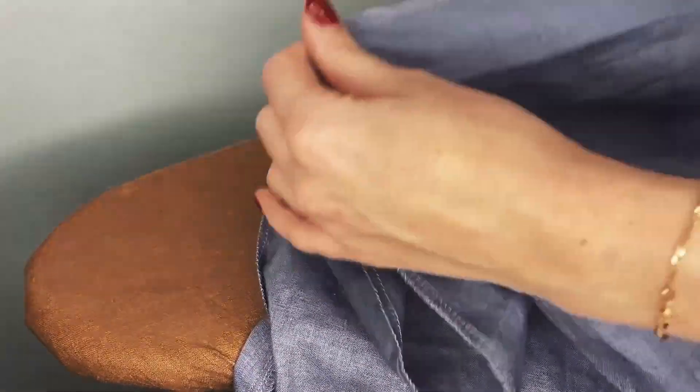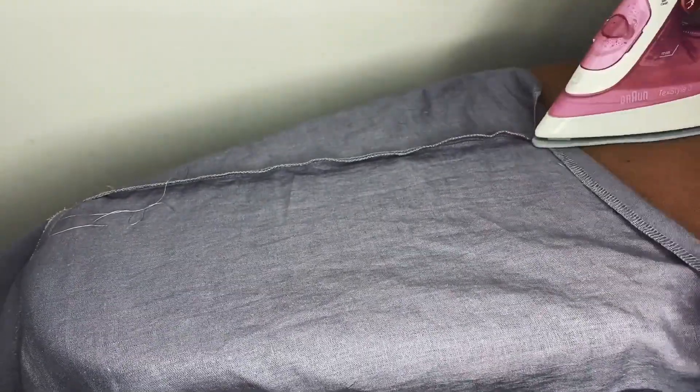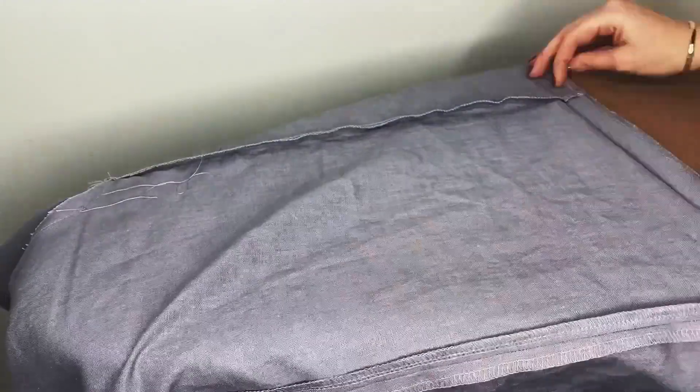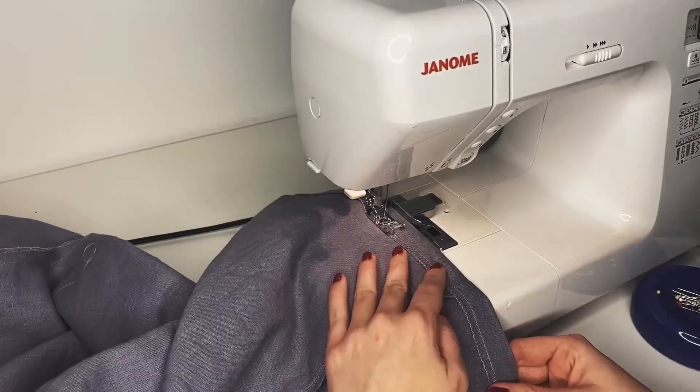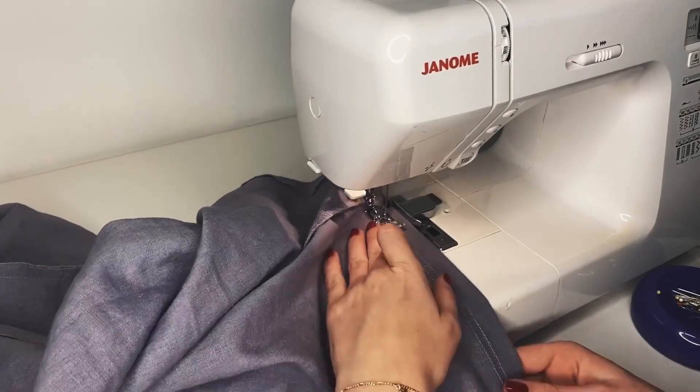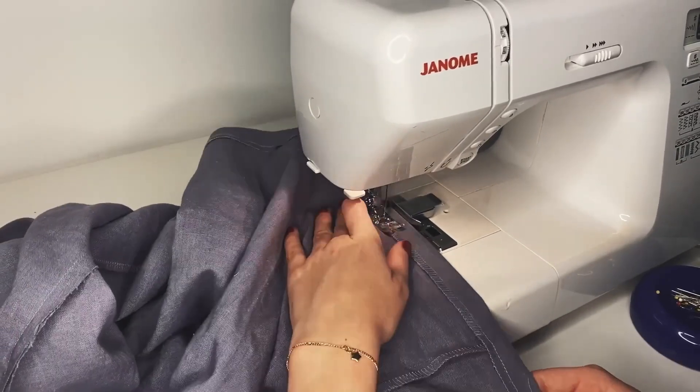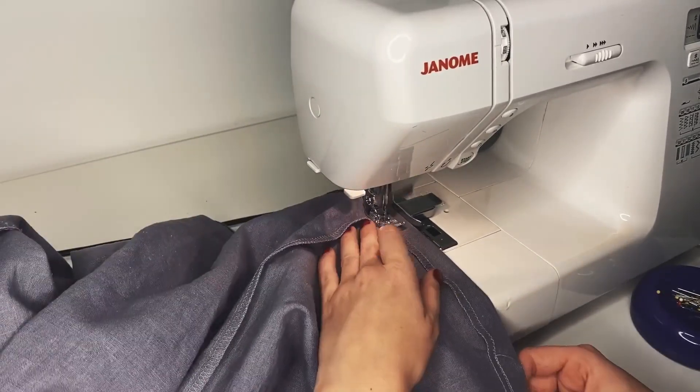Finish the raw edge of the bottom of the shirt with an overlock stitch. Fold the bottom of the shirt over by 2 cm and press it with an iron. Once the hem is folded, stitch it all the way around, maintaining a seam allowance of 1.8 cm. Use a sewing magnet to assist you in sewing a straight line.